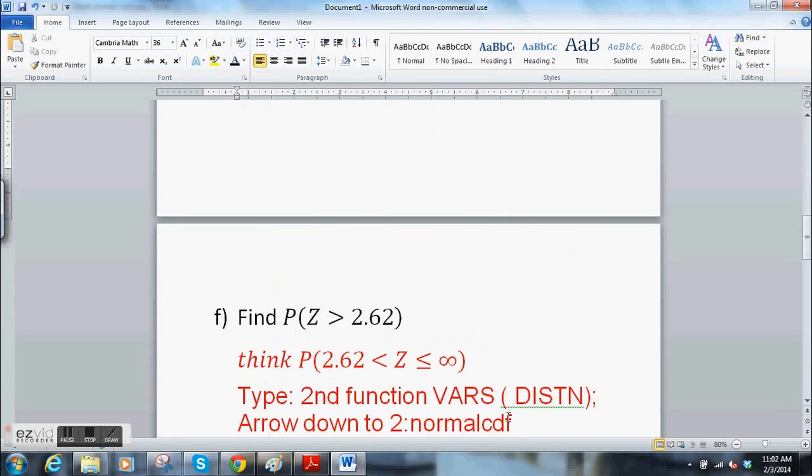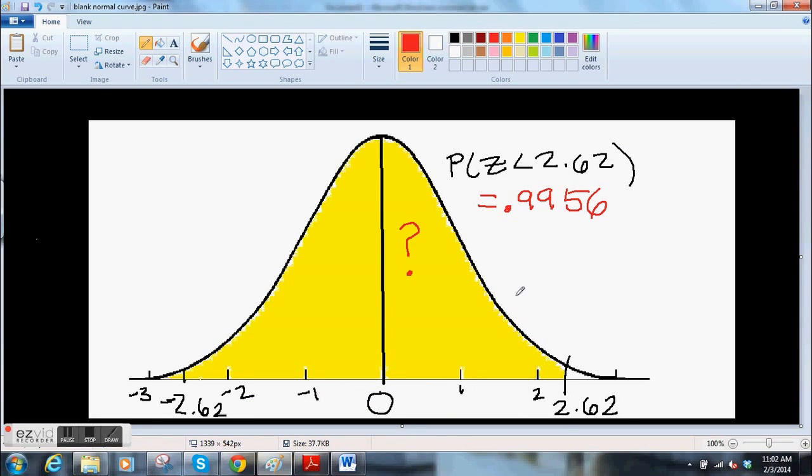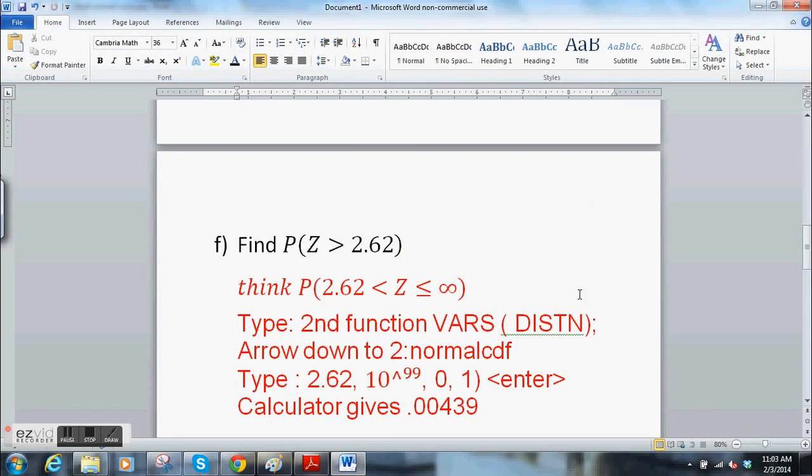Next problem. Find the probability that Z is greater than 2.62. So some of you can see on the picture that the greater than part is going to be 1 minus the less than side. But we can do it on the calculator. Let's do it on the calculator. Why not? In case you don't want to think that much on a test.